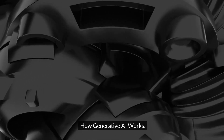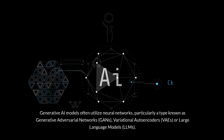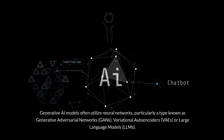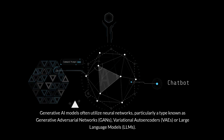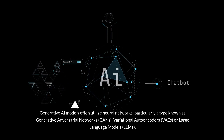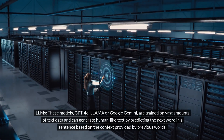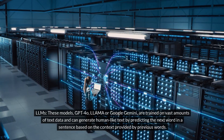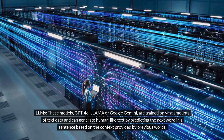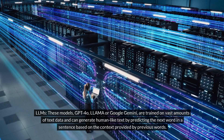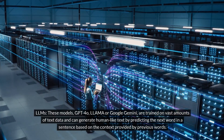How generative AI works. Generative AI models often utilize neural networks, particularly a type known as generative adversarial networks, GANs, variational autoencoders, VAEs, or large language models, LLMs. These models — GPT-4o, LLaMA, or Google Gemini — are trained on vast amounts of text data and can generate human-like text by predicting the next word in a sentence based on the context provided by previous words.